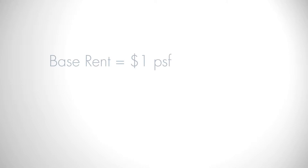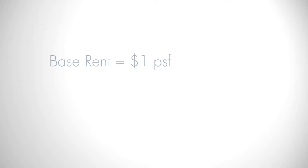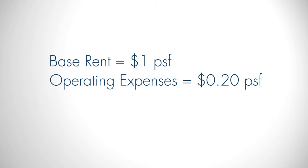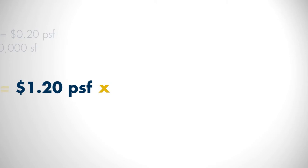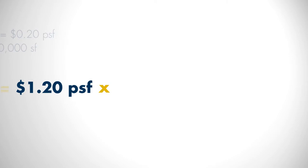For example, your base rent is $1.00 per square foot, your operating expense is $0.20 per square foot, and you have a lease for 50,000 square feet. You would add the $1.00 per square foot plus the $0.20 per square foot to come up with a total gross rental rate of $1.20 per square foot. You would then take the $1.20 and multiply it by 50,000 square feet, which gives you $60,000 for monthly rent.